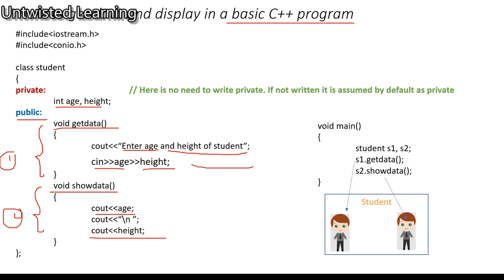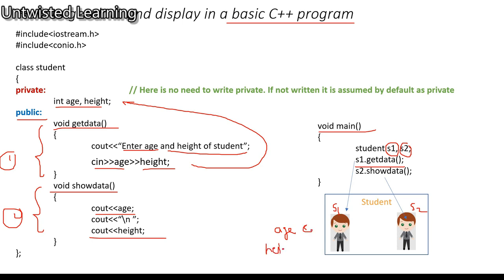The get data function will access age and height which are declared in the private section. In void main, I have created two objects S1 and S2. Whenever you do S1.get_data, it will get age and height for this student — that is object S1. Whenever you do S2.get_data, it will get the data for object S2.